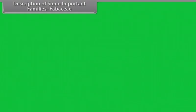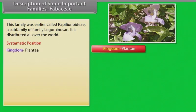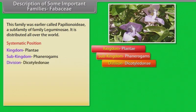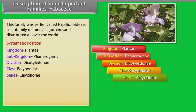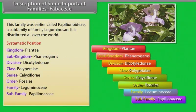Description of some important families. Family Fabaceae: this family was earlier called Papilionатае, a subfamily of family Leguminosae. It is distributed all over the world. Systematic position — Kingdom: Plantae; Sub-kingdom: Phanerogams; Division: Dicotyledoni; Class: Polypetalae; Series: Calyciflorae; Order: Rosales; Family: Leguminosae; Subfamily: Papilionосае; Family: Fabaceae.